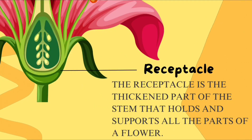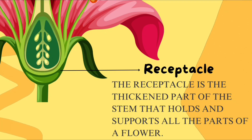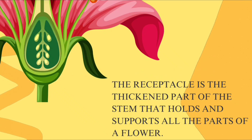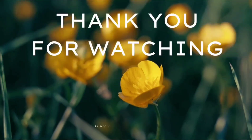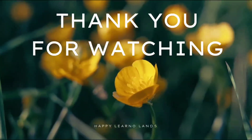This part of a flower is called receptacle. The receptacle is the thickened part of the stem that holds and supports all the parts of a flower. Thank you for watching.